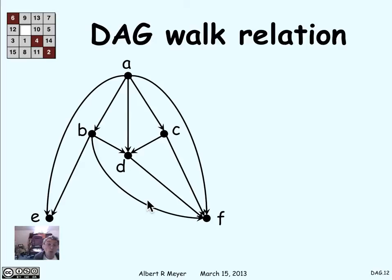When we're looking at a DAG, we're basically usually interested in just the walk relation of the DAG. If we're only interested in the walk relation, then many different DAGs are going to have the same walk relation, and it's natural to ask: what's the most economical one? Is there a minimum DAG that defines a given walk relation? Let's look at an example.